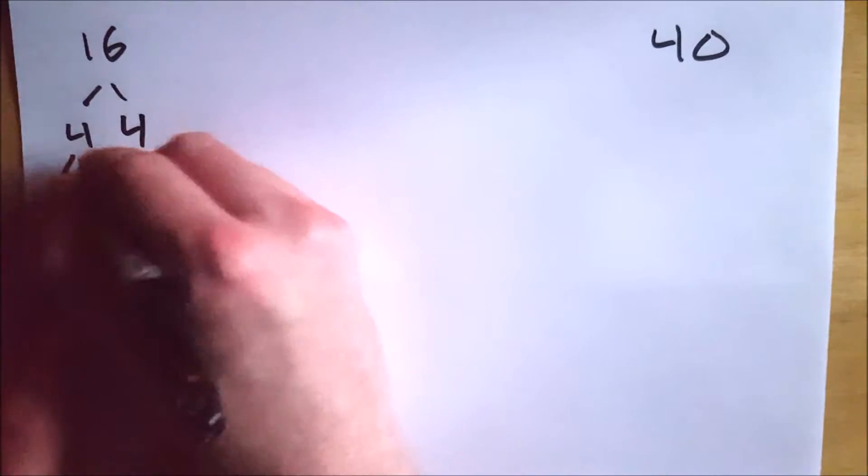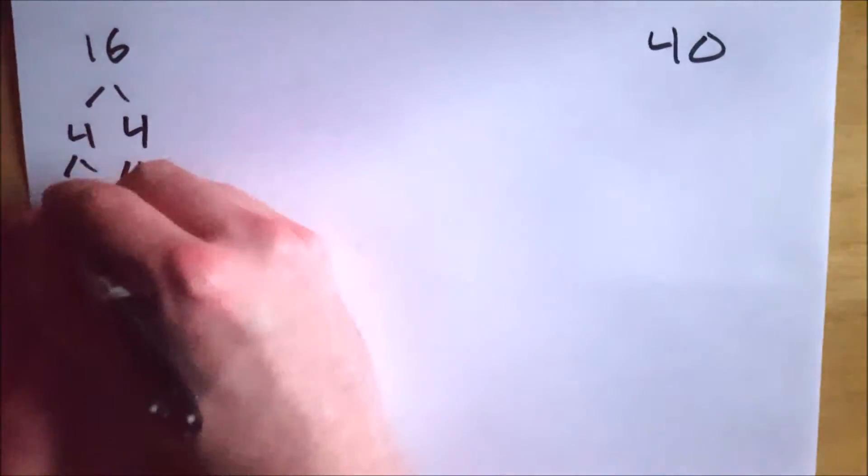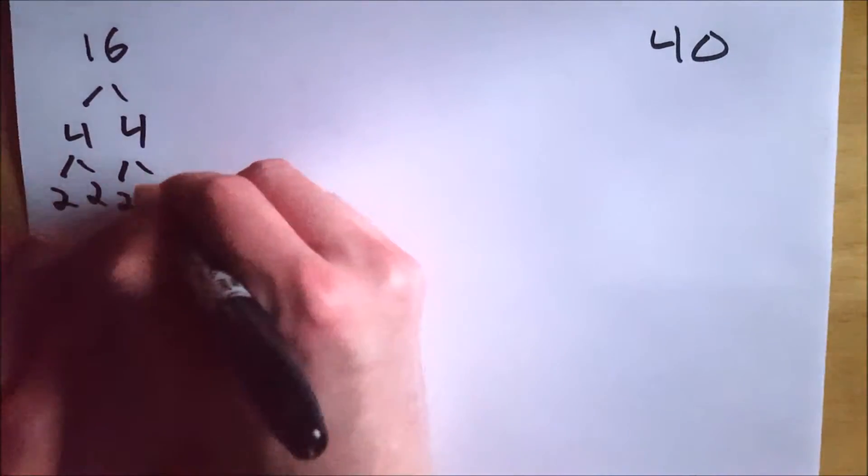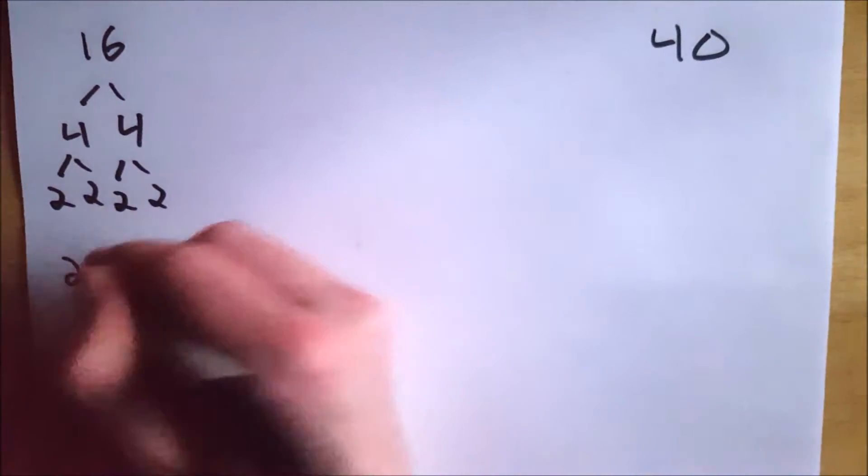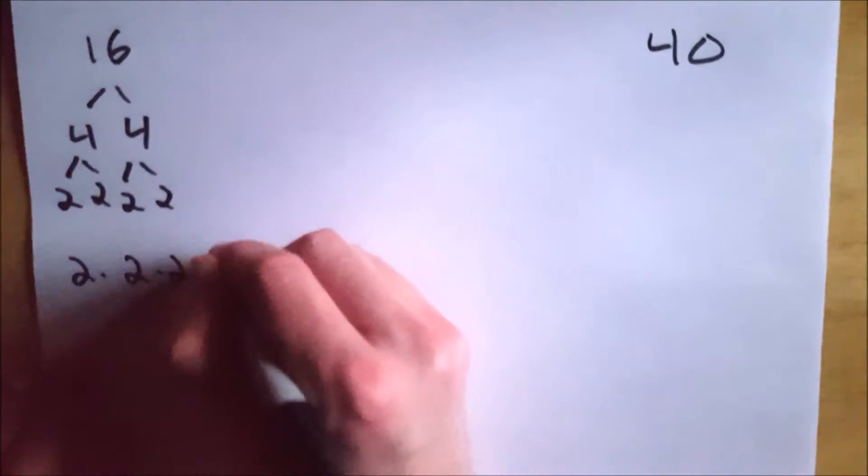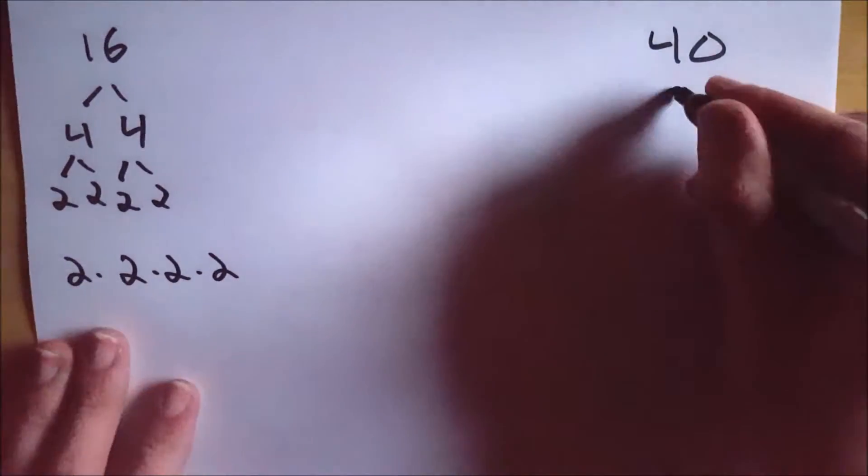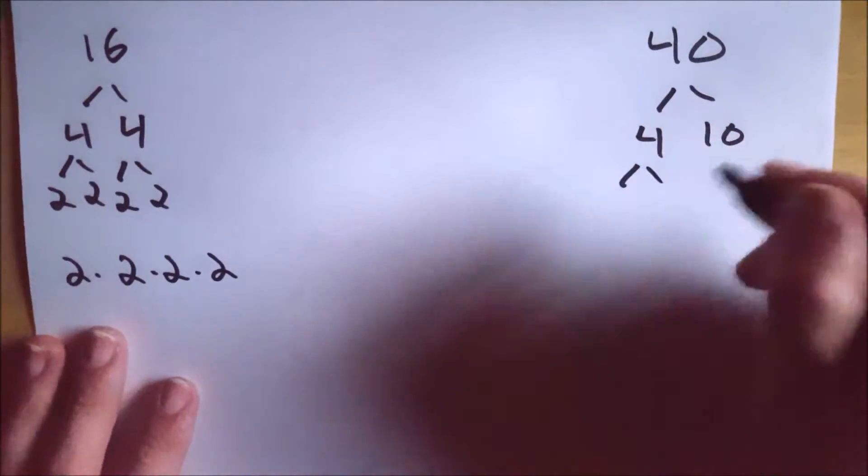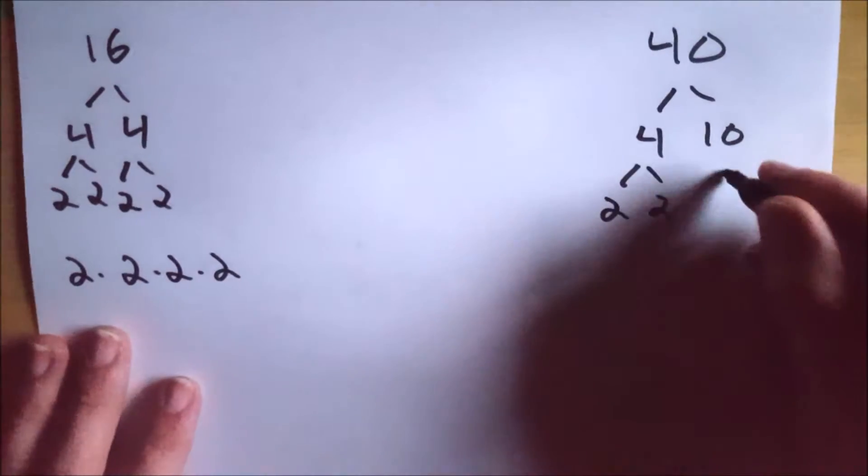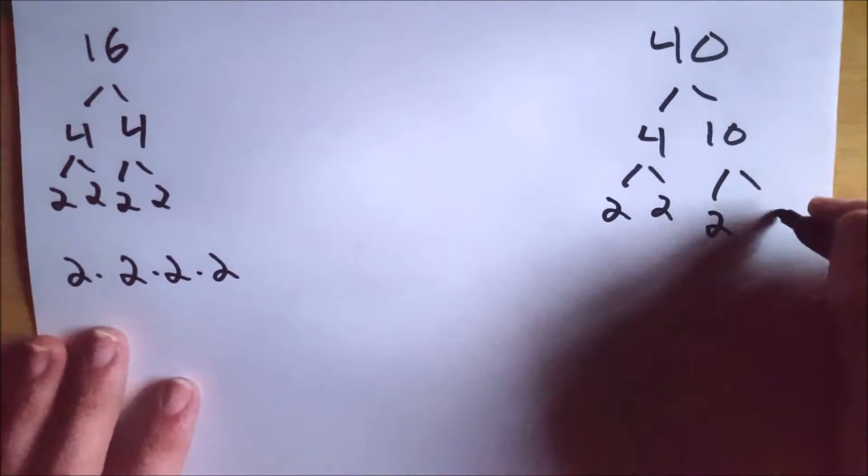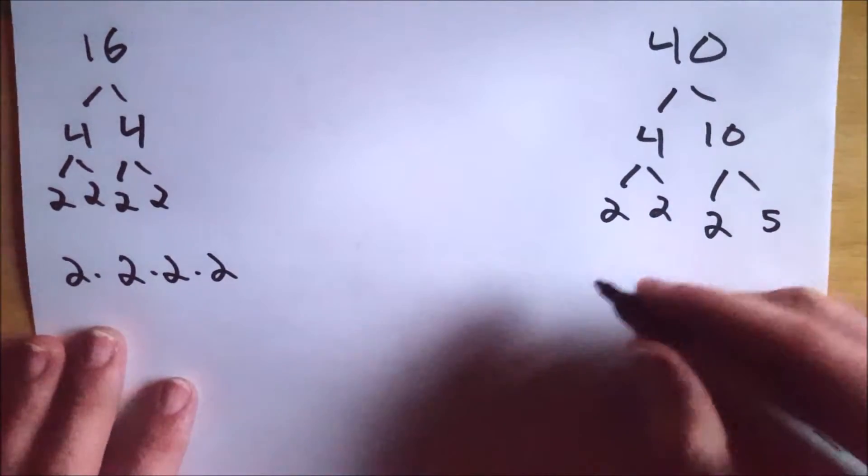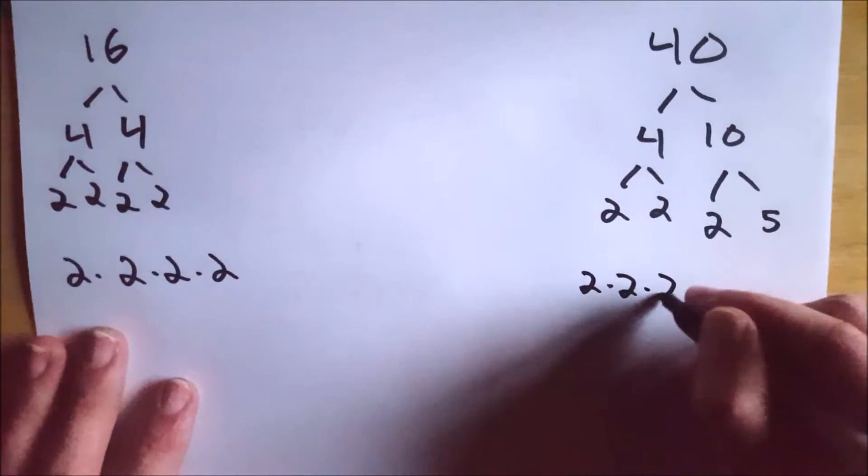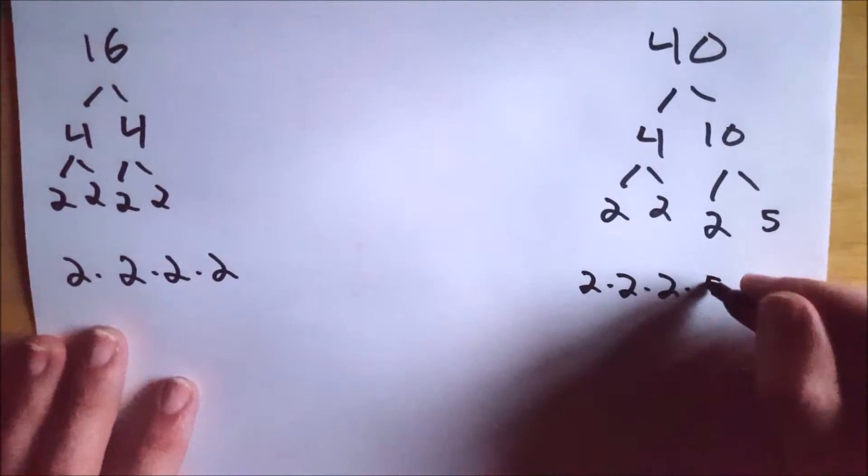16 can be broken down into 4 times 4. Both of those numbers can be broken down into 2 times 2, which is prime. So that leaves us with 2 times 2 times 2 times 2. 40 can be broken down into 4 times 10. 4 can be broken down into 2 times 2. 10 can be broken down into 2 times 5. All of those numbers are prime. That leaves us with 2 times 2 times 2 times 5.